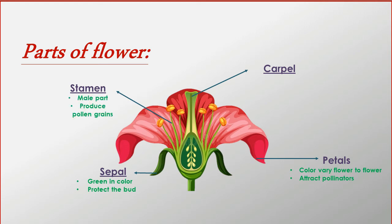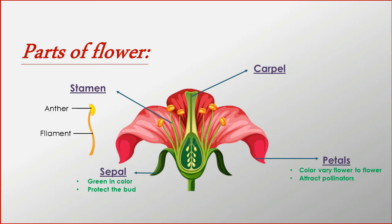The third part of the flower is the stamen. It is the male part of the flower and produces pollen grains. The stamen consists of two parts: filament and anther. Within the anther, there is a pollen sac in which pollen grains are present.